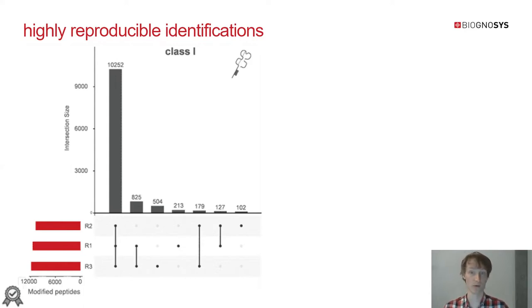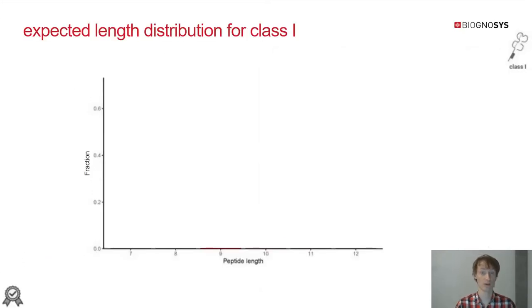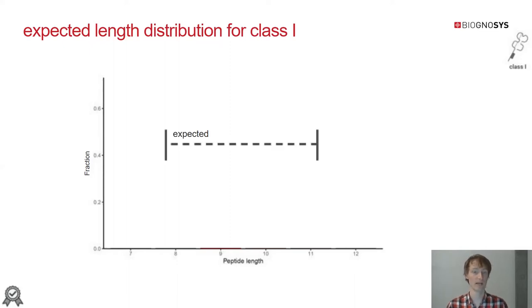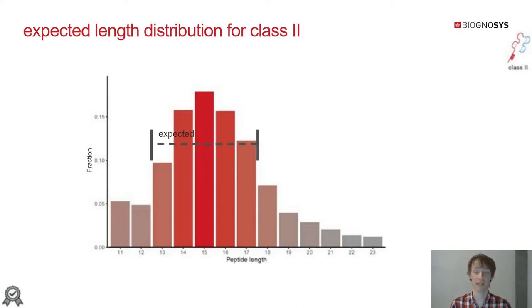We then pulled down class 2 as a follow-up and found very good reproducibility as well, though slightly lower than for class 1, which makes sense because it is a subsequent step — every step in biochemistry increases noise. Another quality check is looking at the peptide length distribution. For class 1, we expect peptides to be mostly nine amino acids in length, with a very sharp peak. Plotting the fraction of peptides at different lengths for the JY dataset, we find a very nice peak at nine-mers, confirming confident enrichment. For class 2, we find the wider distribution expected — around 15 amino acids in length.